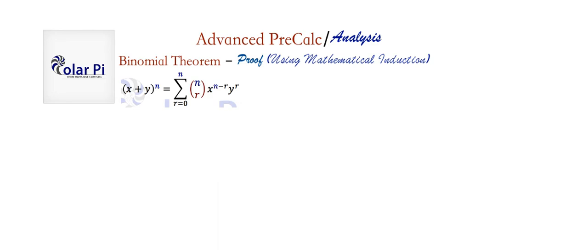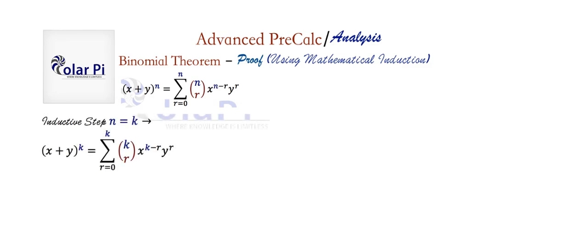So I'm going to skip the basic cases of induction and just jump to the inductive step. As usual in the inductive step, we're going to assume the given statement is true. That is, we let n equal k, and that only means that the binomial (x+y) to the power k is equal to the right-hand side — so we're saying this equation is true.